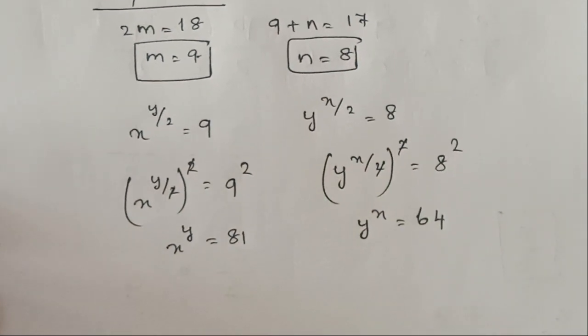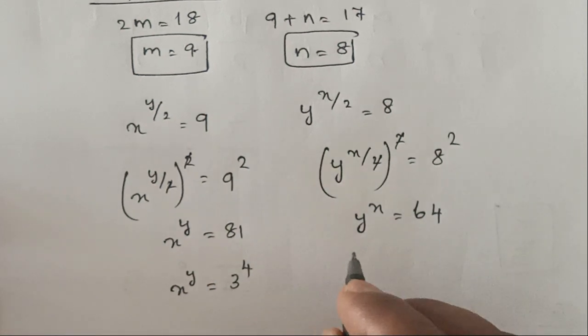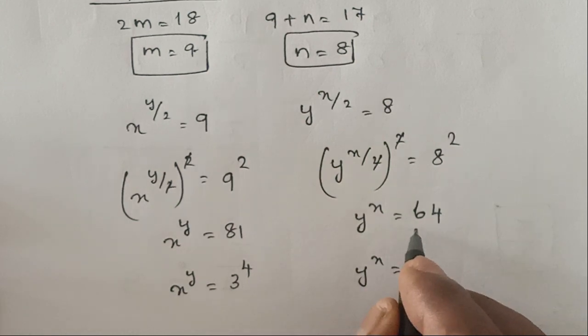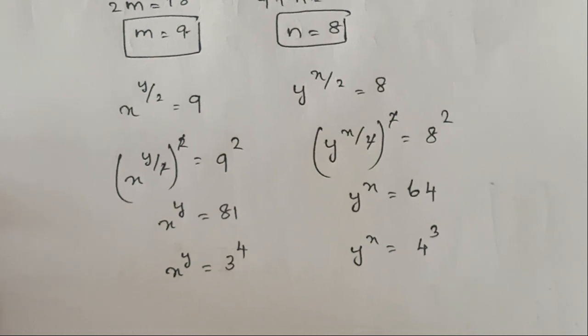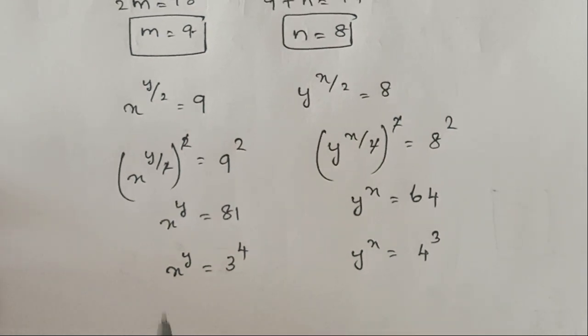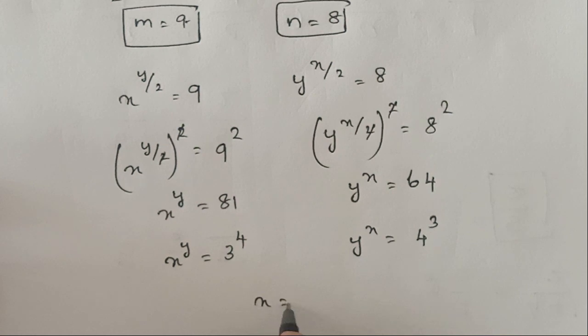Now x^y is equal to 81, which is nothing but 3^4, and y^x is equal to 64, which is nothing but 4^3. So now it is clear that the value of x is equal to 3 and the value of y is equal to 4.